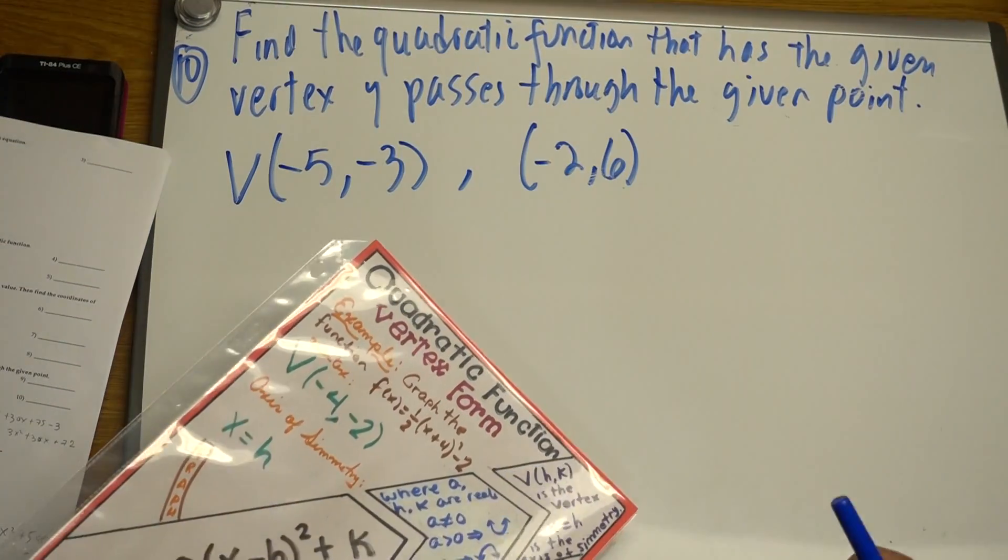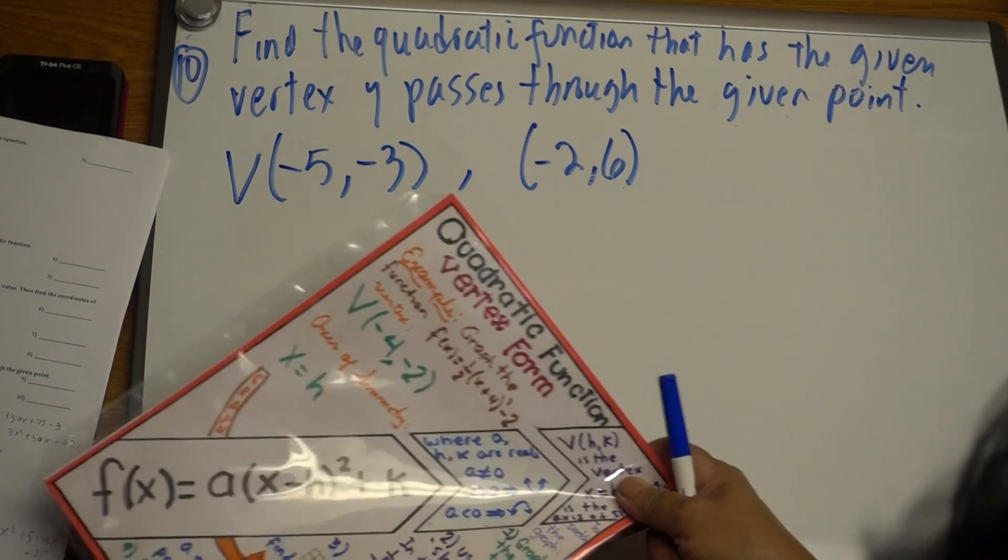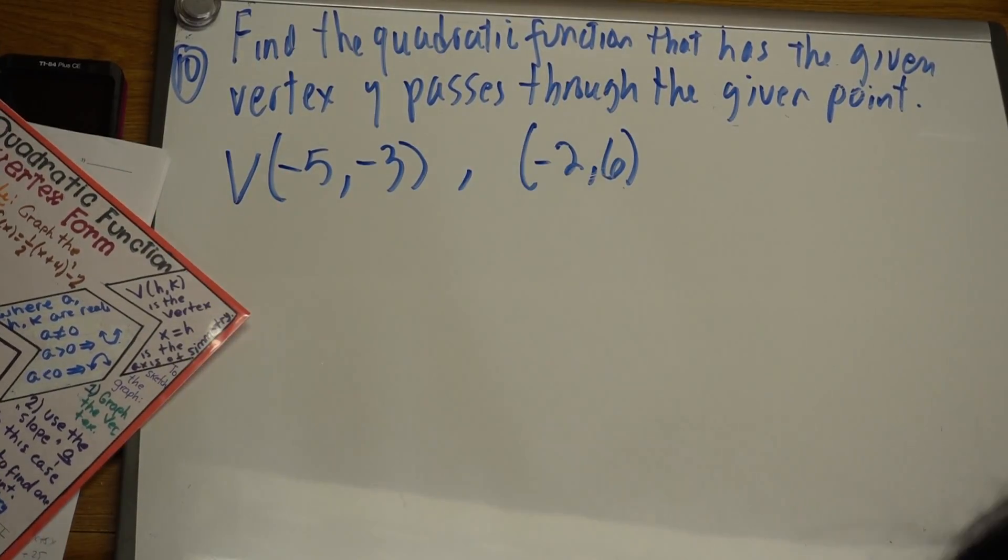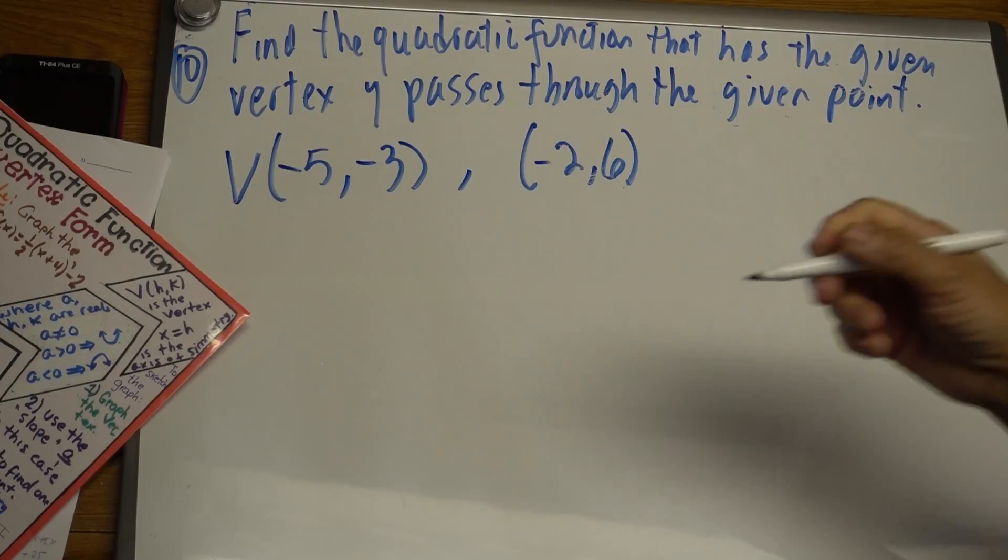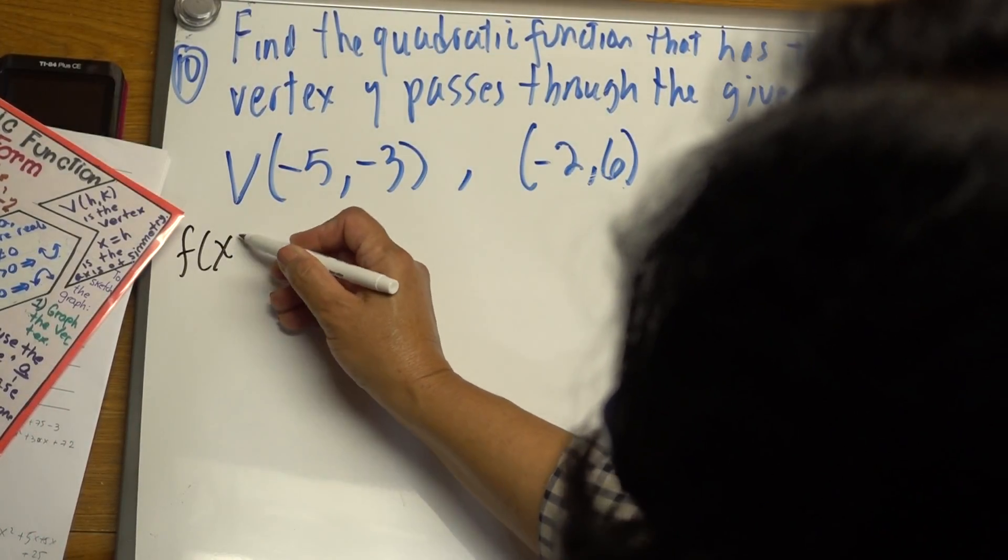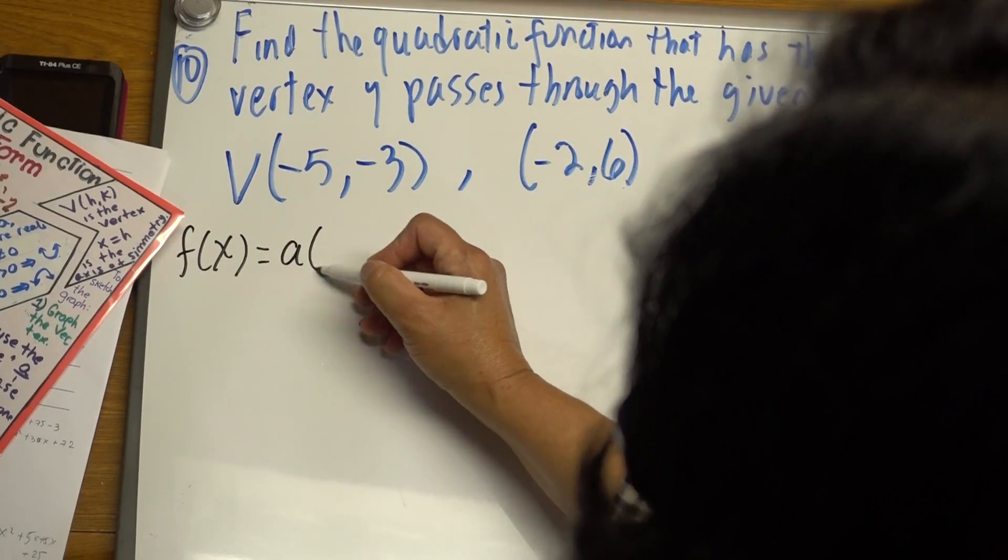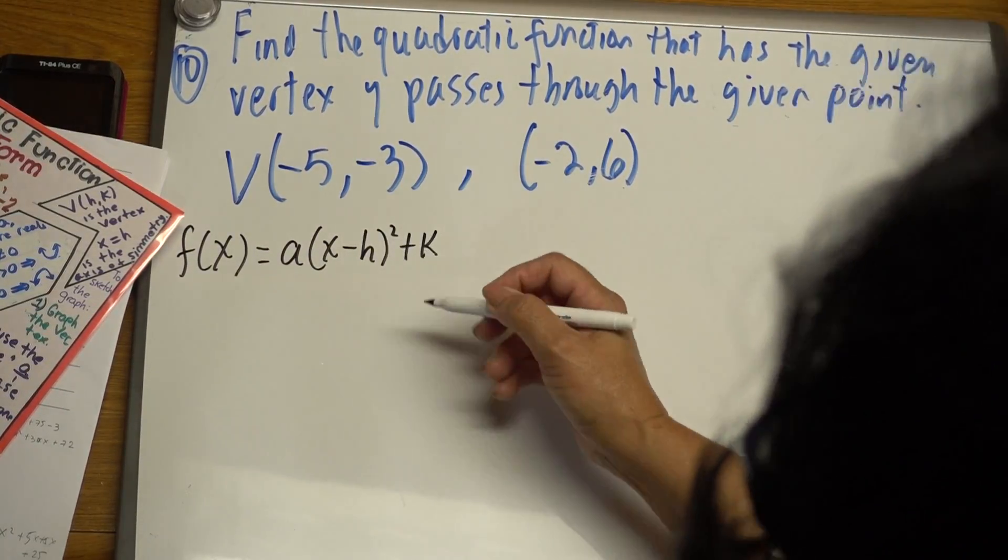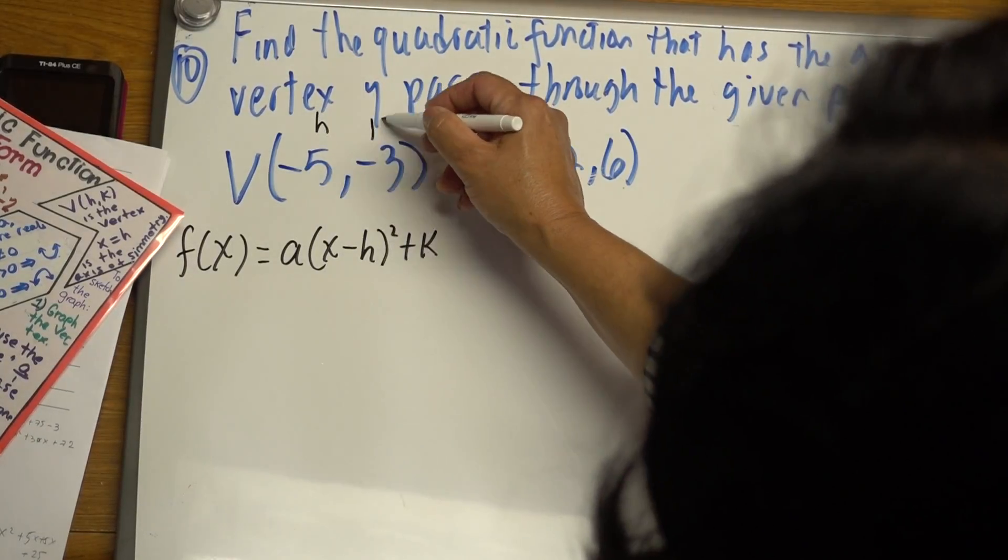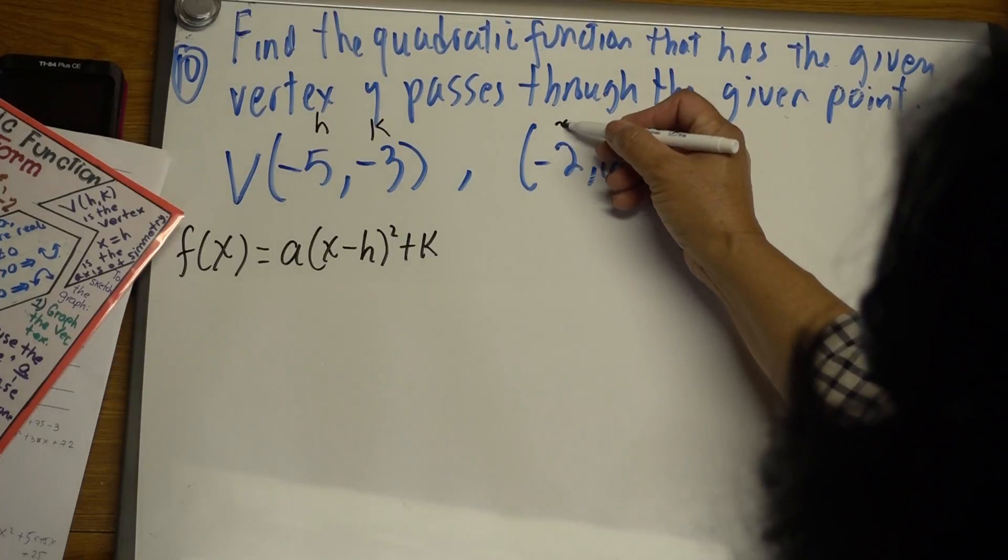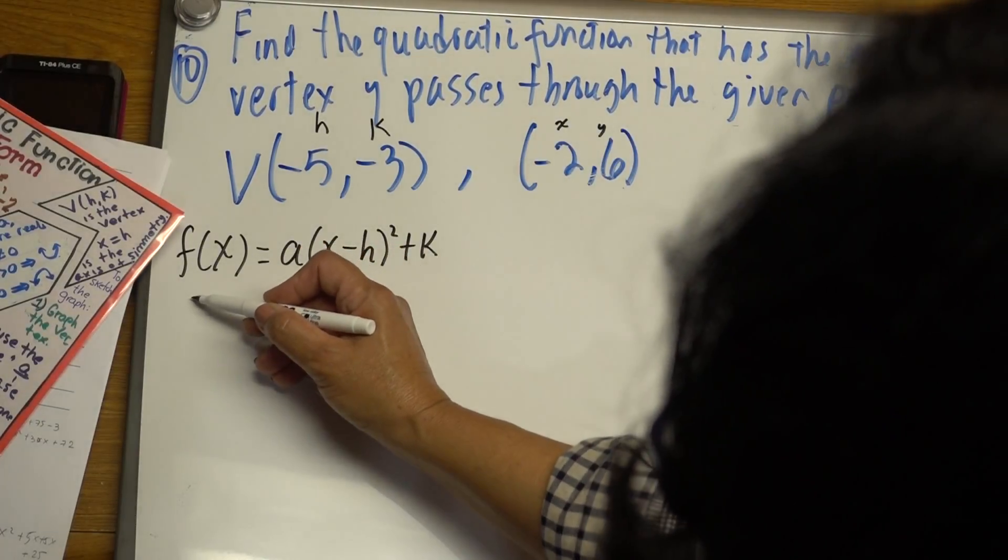We're going to start by writing the equation in vertex form: f(x) equals a times (x minus h) squared plus k. This is your h, this is your k, and this is the given point. We're going to use it as x and y. Let me change this to y.